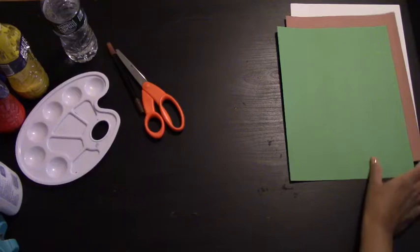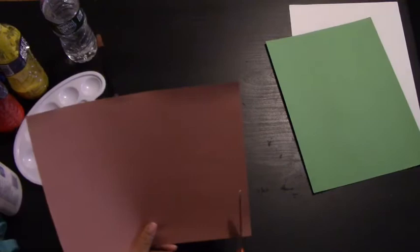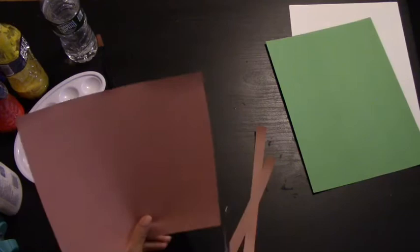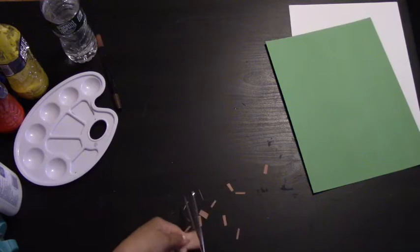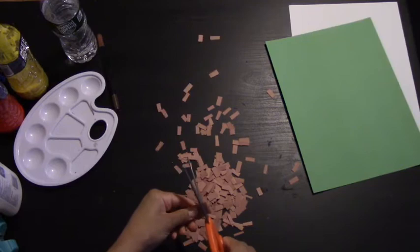First we're going to start off by taking our brown sheet of paper. Take your scissors and cut strips out of the paper about an inch wide. Continue this until the paper is completely cut. Put these strips of paper together and begin cutting small rectangles out of them. They should look like this.